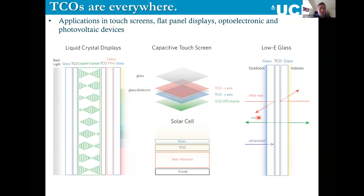So why are we interested in transparent conducting oxides? Well, they're literally everywhere. You have applications in touch screens — your phone probably has a screen with a transparent conducting oxide in it. You have them in liquid crystal displays, touch screens, low emissivity glass, and they're part of every single solar cell. No matter what the solar cell architecture, there's more than likely a transparent conducting oxide allowing light through into your absorber and also acting as an electron transport layer.